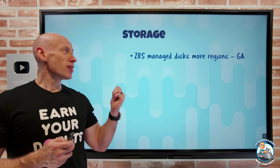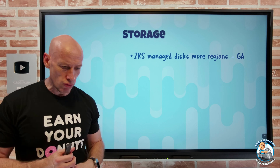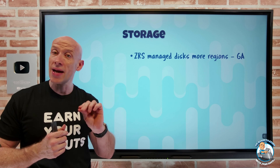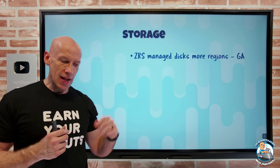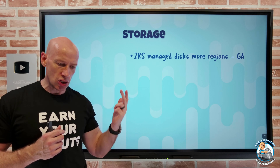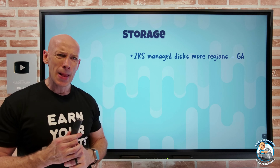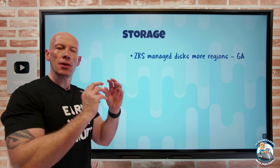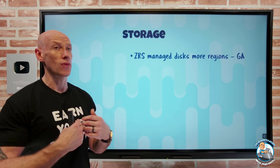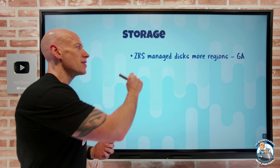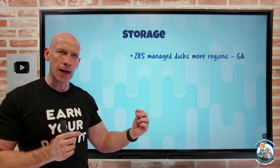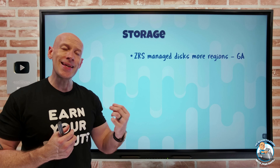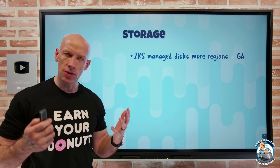On the storage side, zone-redundant storage managed disks are now available in more regions. This is for the premium SSD and standard SSD, not the premium SSD V2. They've added it to Brazil South, UK South, East US, East US 2, and South Central US regions. The whole point with managed disks is it abstracts away the underlying storage account as a first-party Azure resource with native capabilities like snapshotting. ZRS means the three copies of the data are distributed over the three availability zones, giving better resiliency to zonal data center type failures.